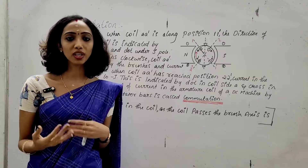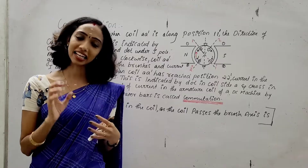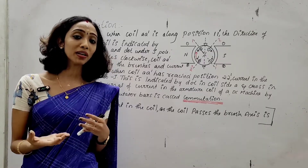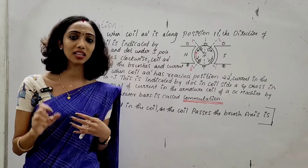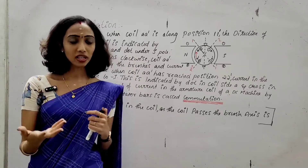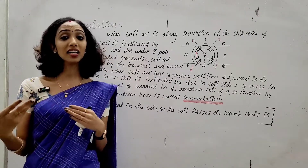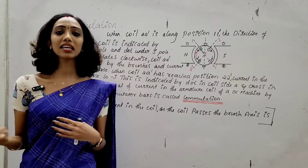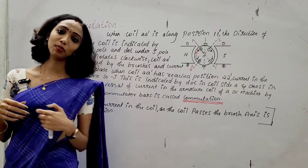What is a commutator? Simply put, it is a rectifier. The commutator acts as a mechanical rectifier. When the generator produces AC output, the commutator converts it to DC. That conversion part is called the commutator.